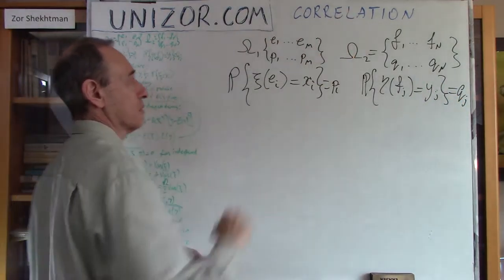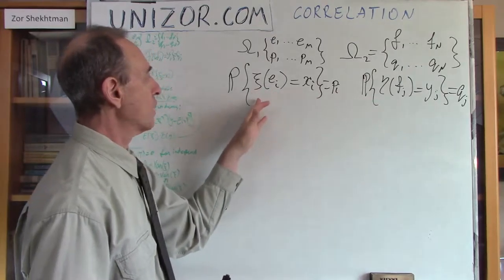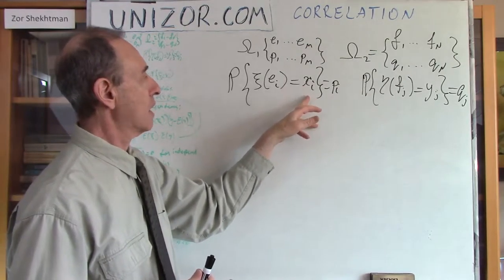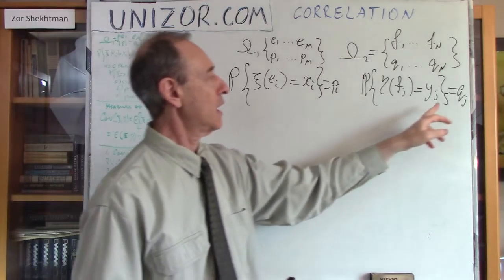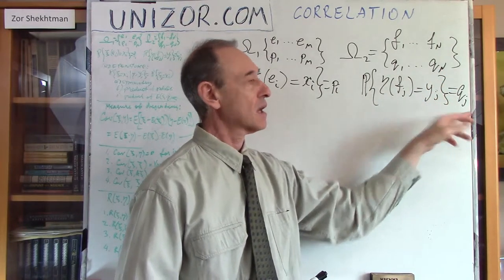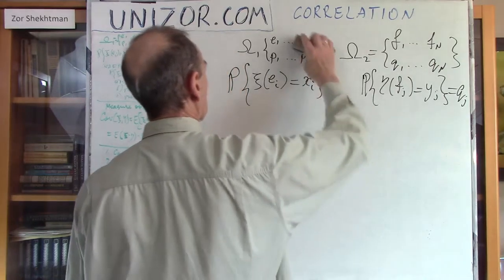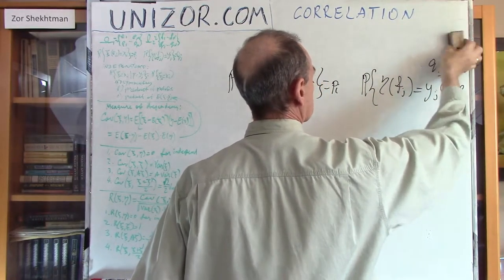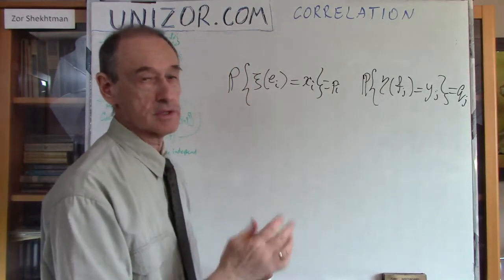So let's forget about probability spaces — we don't really need them anymore, just for definition. We have two random variables ξ and η. ξ takes M different values x₁ through xₘ and the probability of each is pᵢ, and random variable η takes values yⱼ where j is from 1 to N and the corresponding probability qⱼ. This is just to remind you what a random variable is.